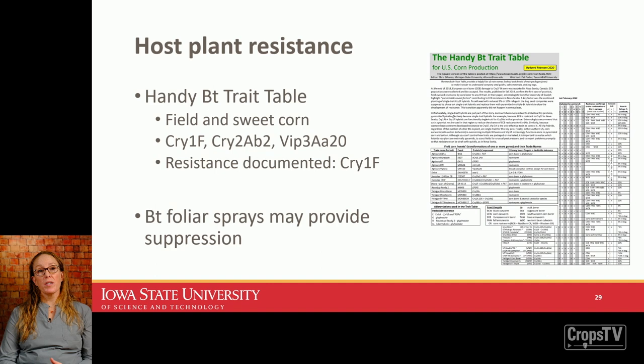For those who grow sweet corn, BT foliar sprays may provide some suppression, but the caterpillars have to be accessible. Once they get in and around the ear, sprays become much less effective, so timing is very critical for good suppression.